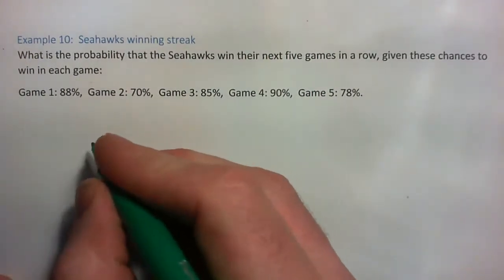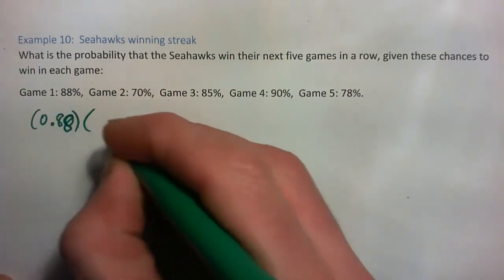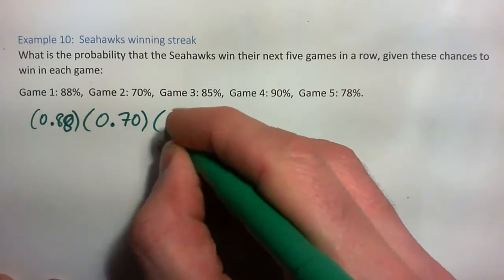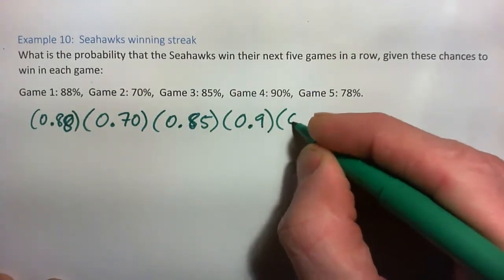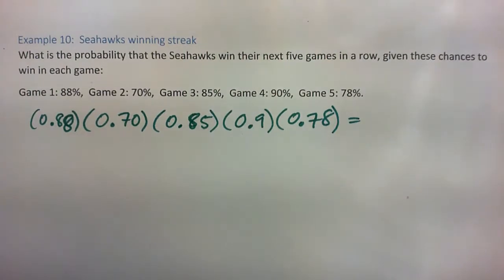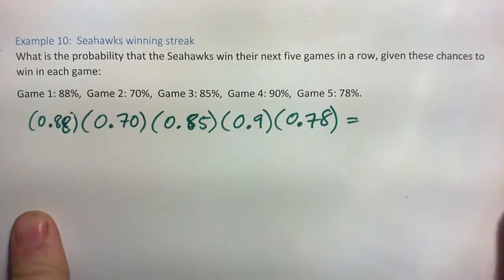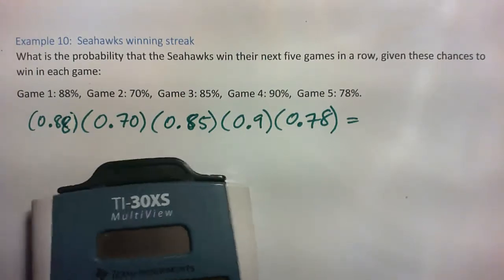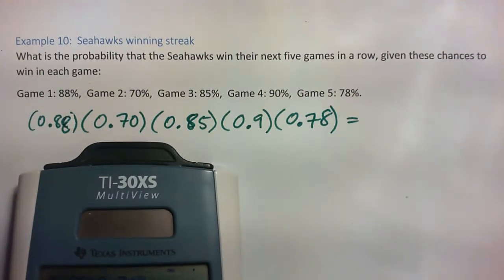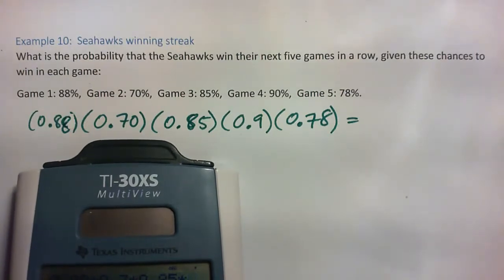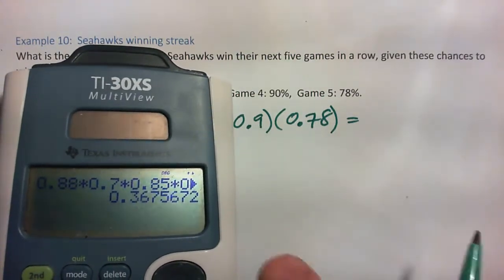Using the product formula, we simply multiply the probability of winning each game: 88% times 70% times 85% times 90% times 78%. So: 0.88 times 0.7 times 0.85 times 0.9 times 0.78. We get 0.367 — about 37%.